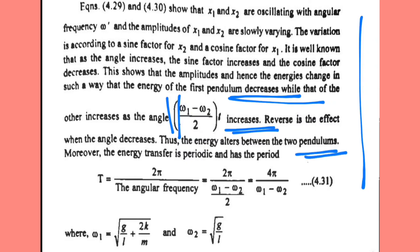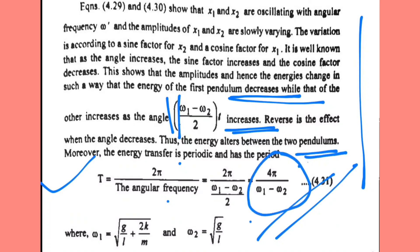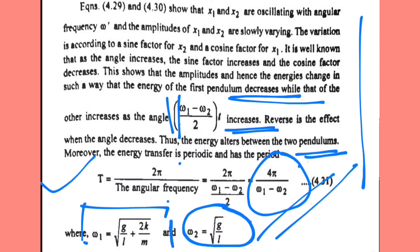Therefore, the energy transfer is periodic and is expressed by the equation: T = 2*pi / ((omega1 - omega2)/2) = 4*pi / (omega1 - omega2), where omega2 = sqrt(g/L) and omega1 = sqrt(g/L + 2k/m).